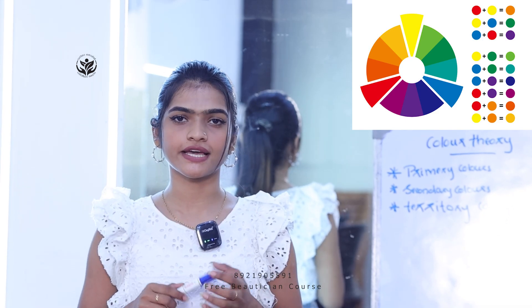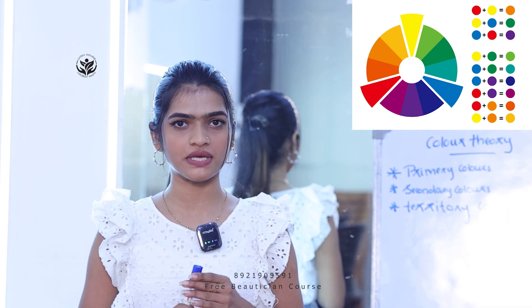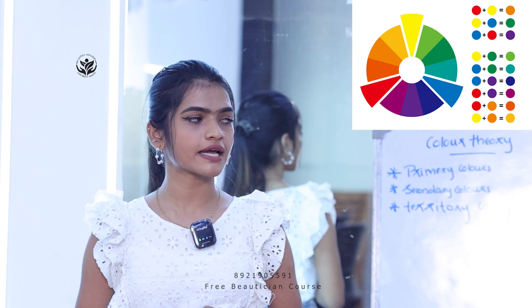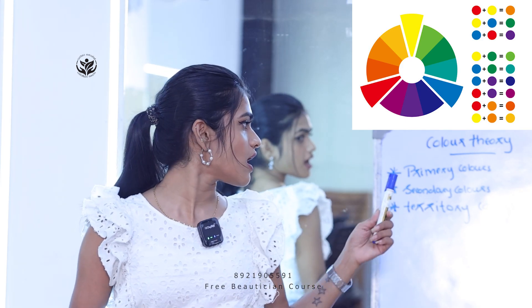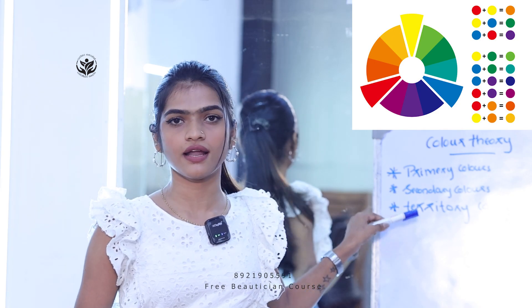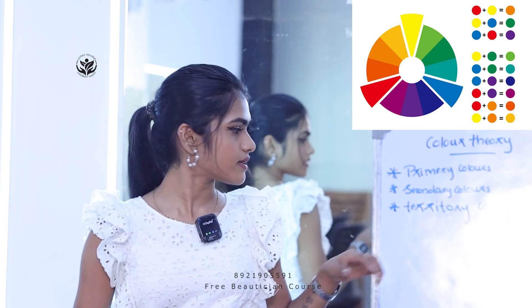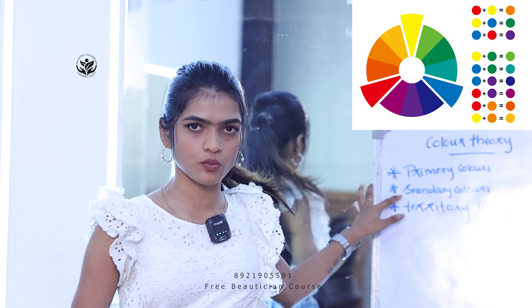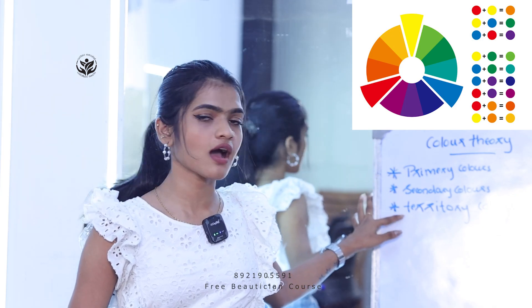The primary colors are red, yellow, and blue. We are going to be mixing them into secondary colors. There are three primary colors, three secondary colors, and six tertiary colors.